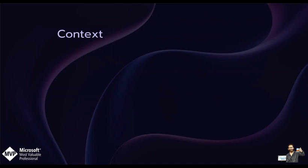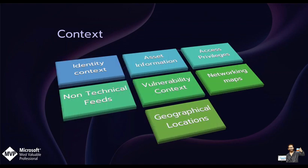Typical contextual information used for security data includes a whole range of things. You have identity context — Azure AD (Entra as it is now), ERP systems, or CRM systems. There's asset information such as a configuration management database, asset privileges like AD group memberships, domain admins, schema admins, etc. Non-technical feeds such as background checks, badge data, and fingerprint scanners. Then you have vulnerability context — reports, missing patches, zero-days, network maps, and geographical locations such as internal network classification and border analytics. A contemporary SIEM must now be able to enhance raw security events with pertinent information due to the exponential growth in events and warnings from a whole array of different products and technologies.